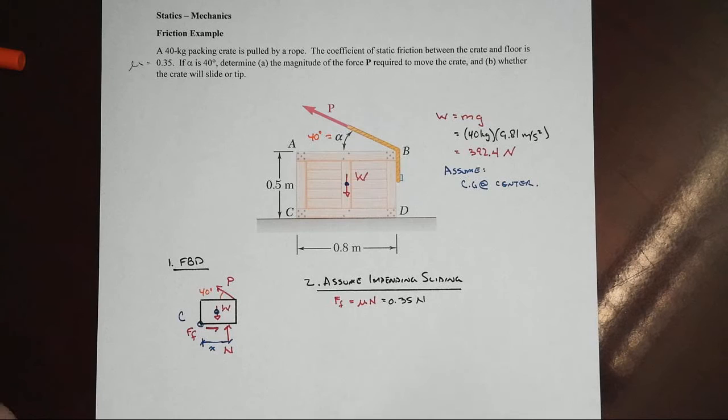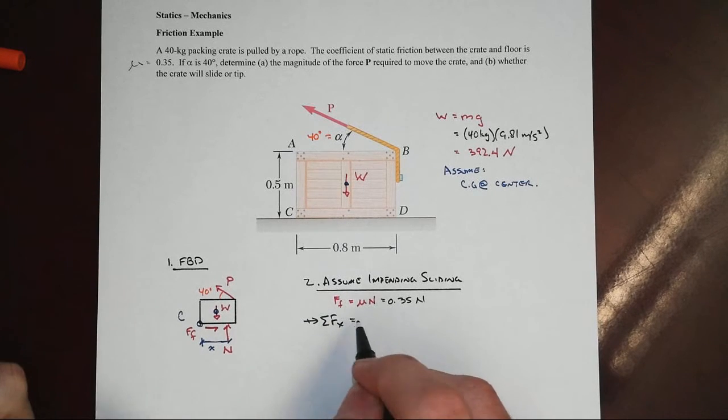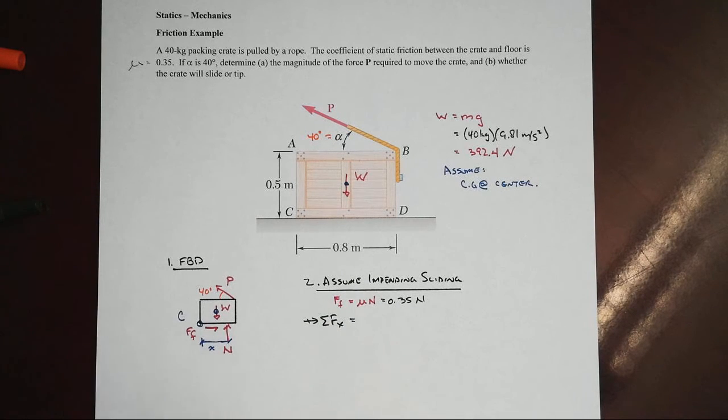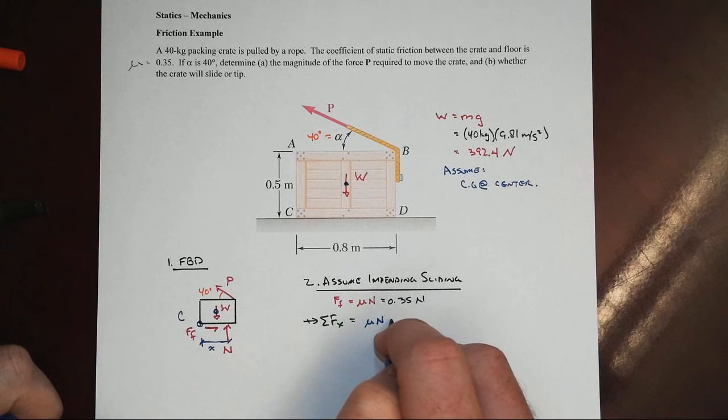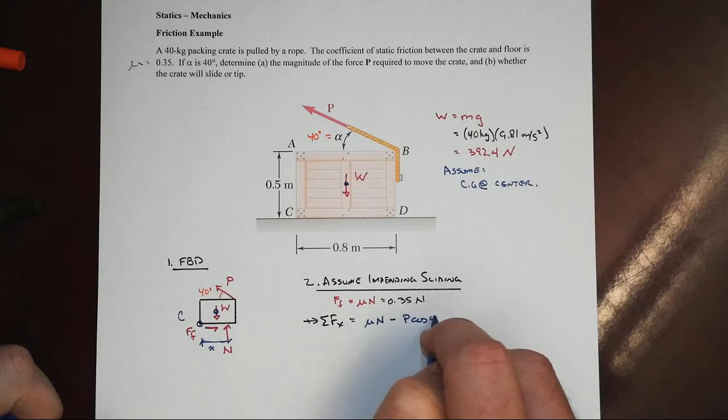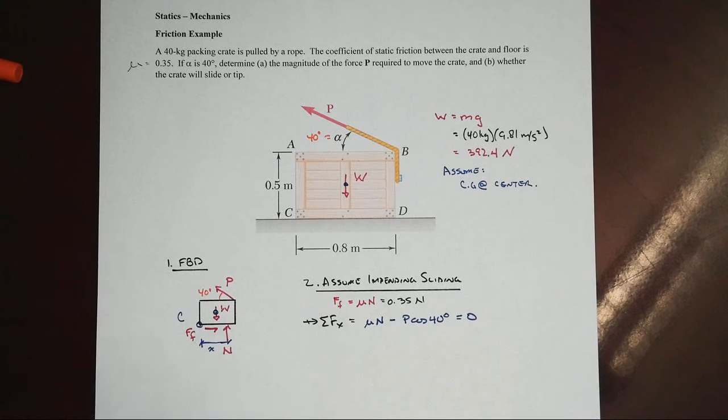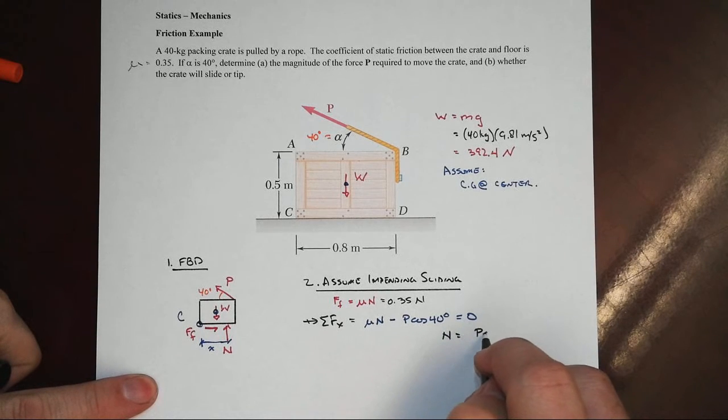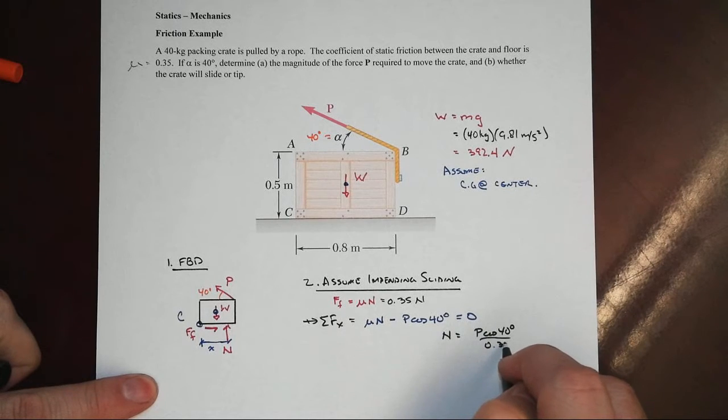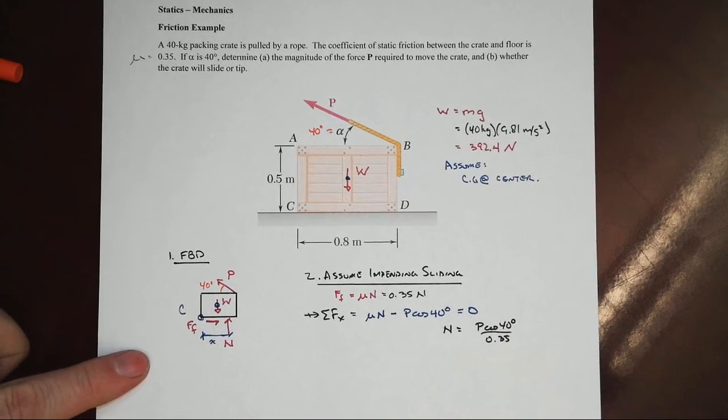For instance, sum of forces in the x. We would then be able to state that we've got F sub f, which equals mu n, minus the x component of our force, set equal to 0. And that gives us a relationship between n and the force P, putting in the actual value for mu in that case.